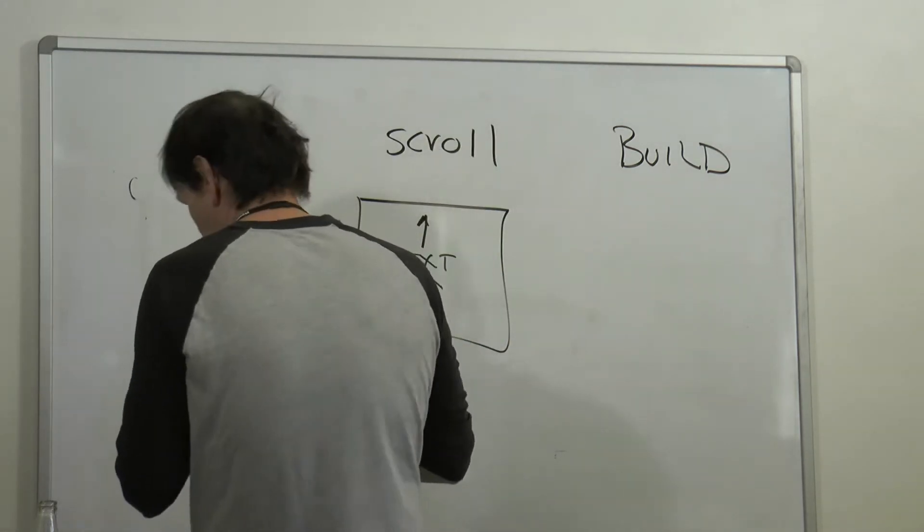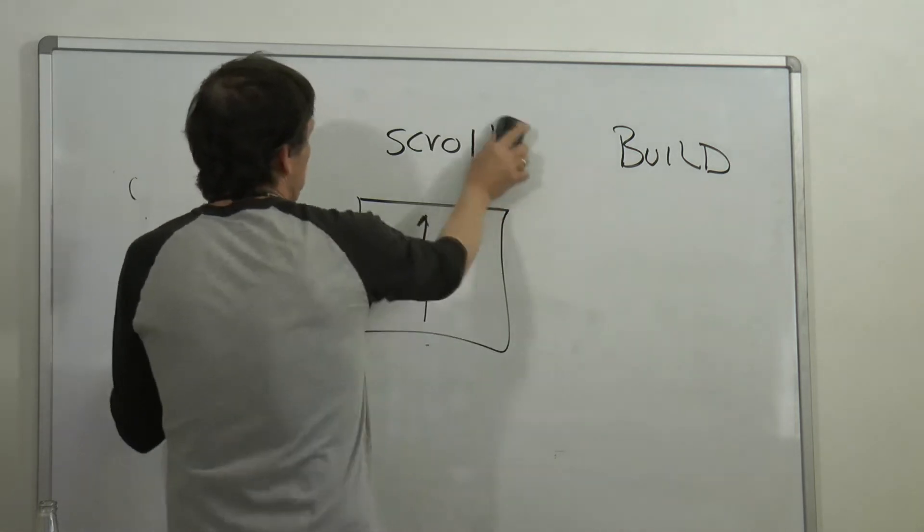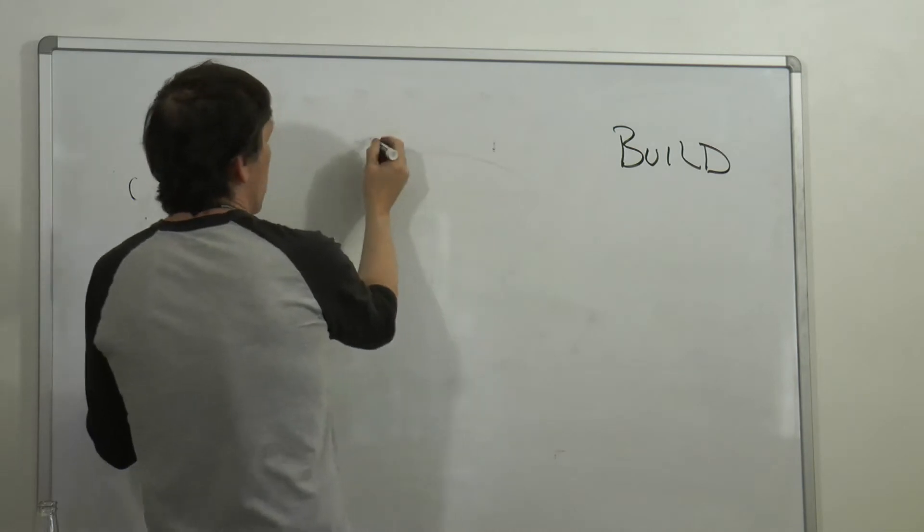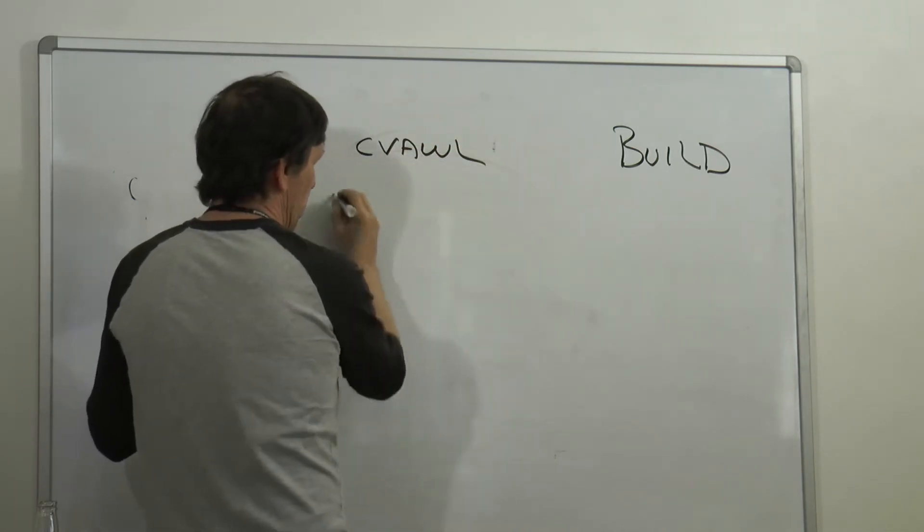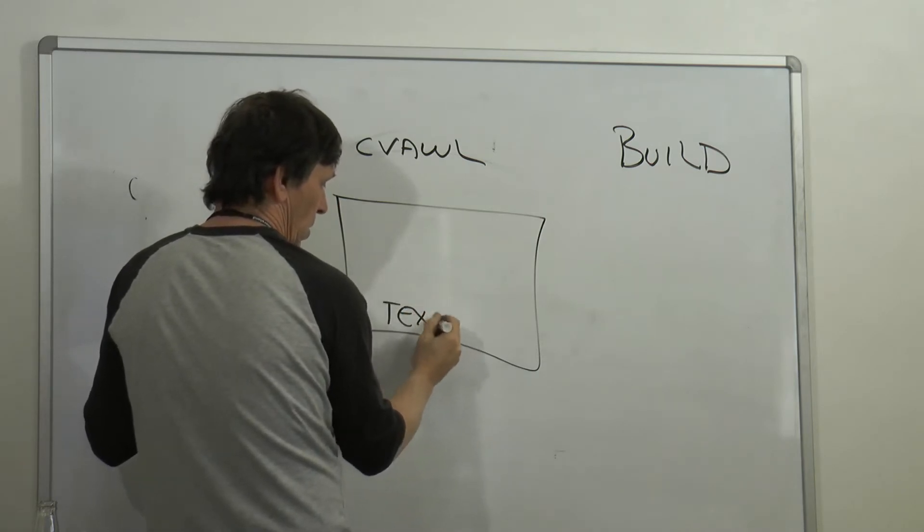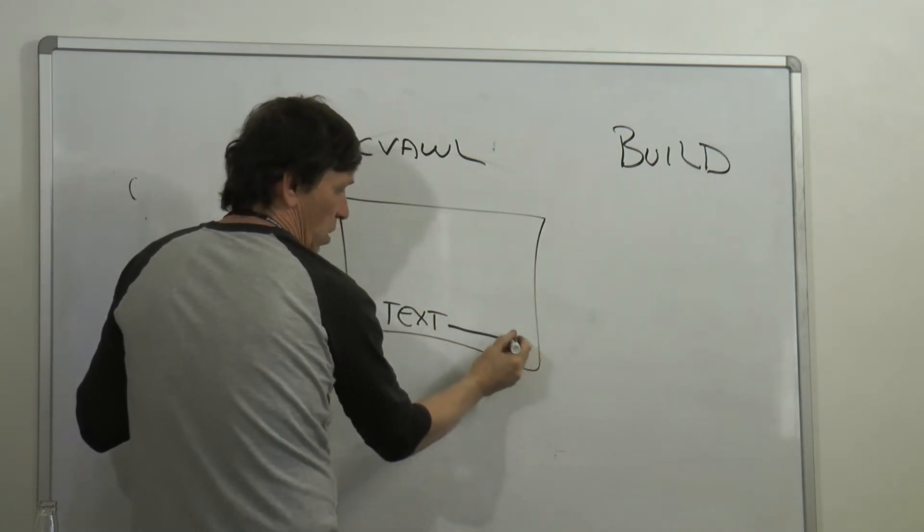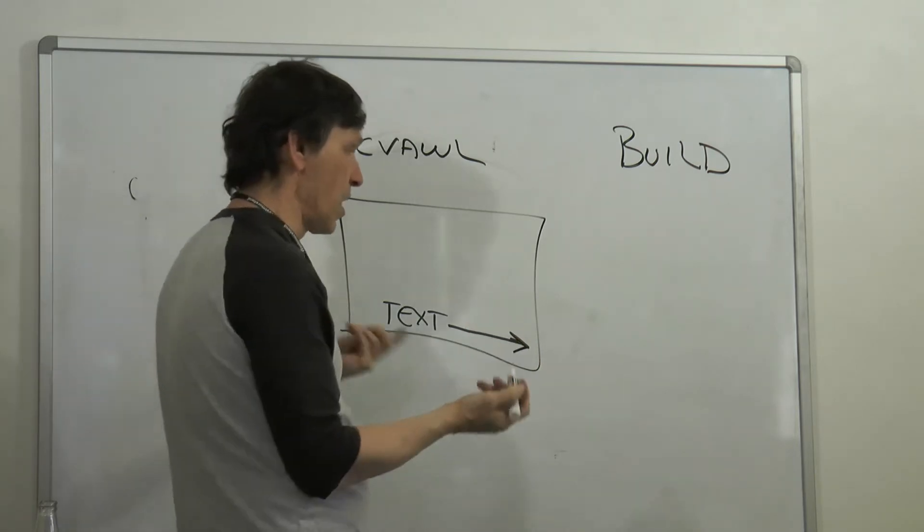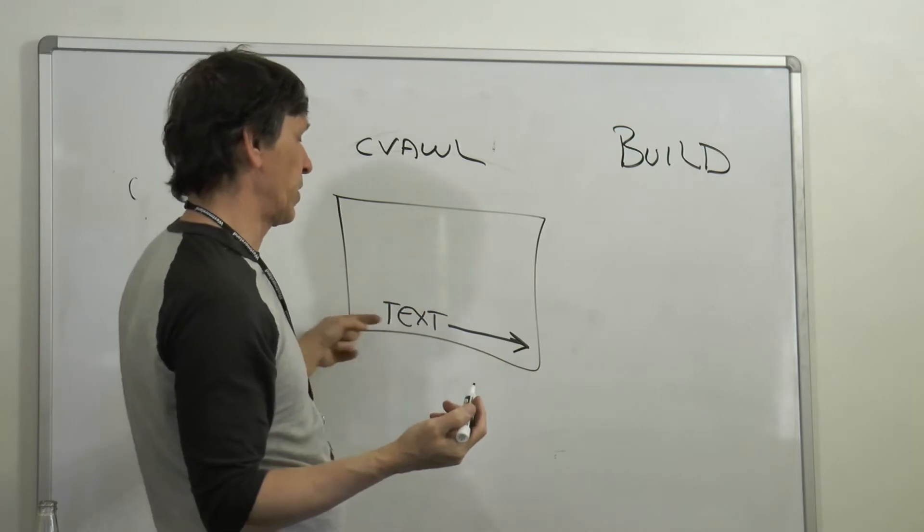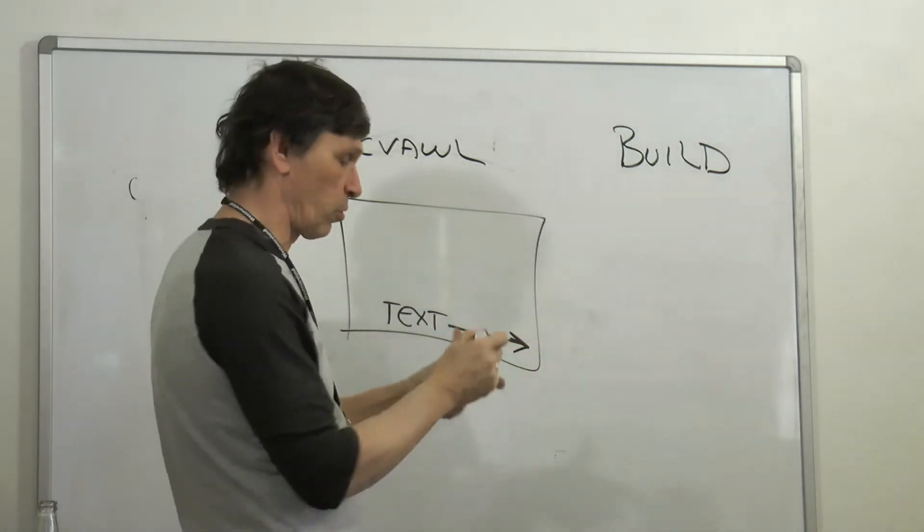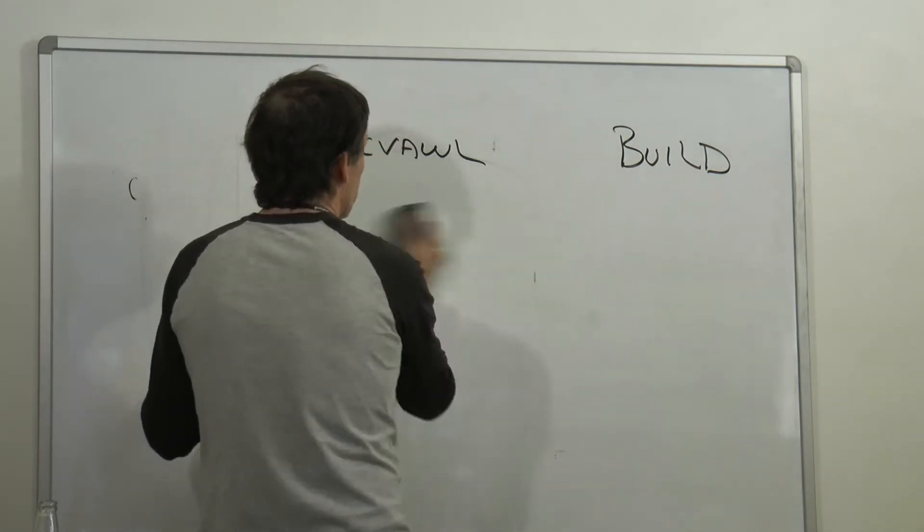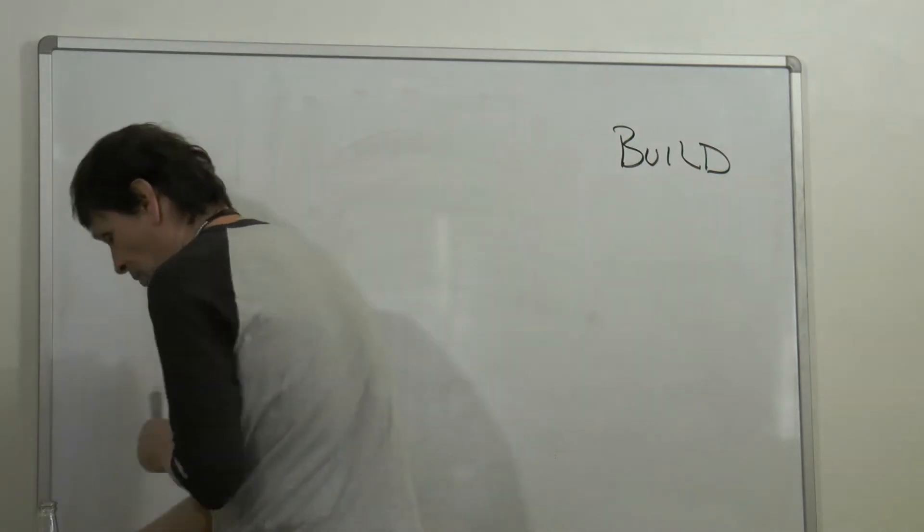The next one is a crawl. A crawl page - you have your screen and then the text elements are crawling across the bottom of the screen. You see that a lot on 24-hour news stations while they're talking about one thing on the screen, they'll have maybe sports or weather scrolling across the bottom.